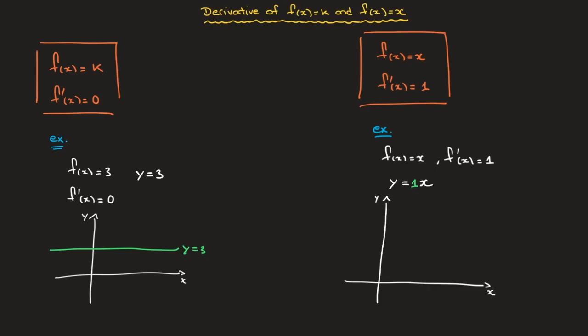the line y equals one x is the line that passes through the origin and whose gradient is equal to one. That's y equals one x. And by very definition, since this is a straight line,